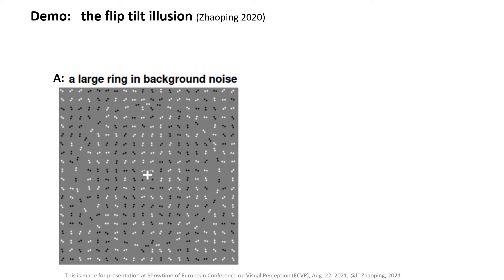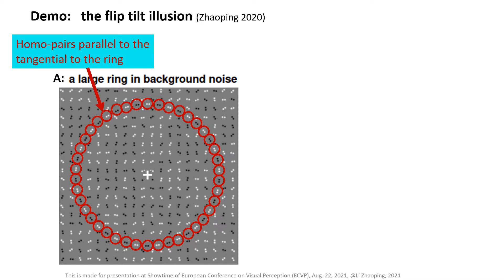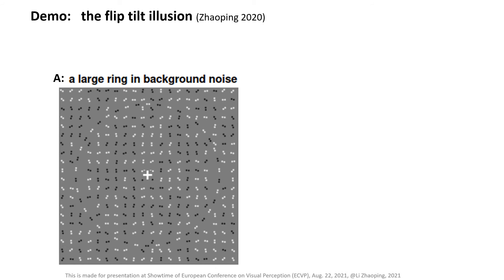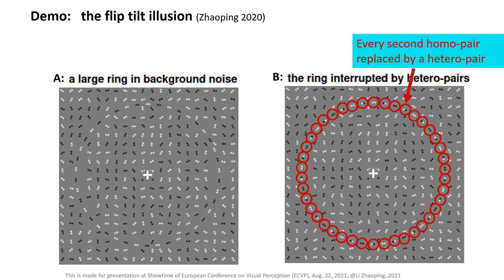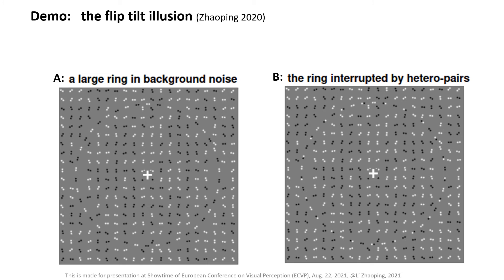To demonstrate this flip tilt illusion, we start with a baseline image without this illusion. If you fixate on the central cross, you can see a large ring in a background of noise. This is formed by many homo pairs of dots aligned tangentially to the ring. This ring is in your peripheral visual field when your gaze is directed to the central cross. No illusions here yet. This second image differs from the first one only in the dot pairs in the ring — every second dot pair is replaced by a hadal pair of dots. Now if you fixate on the central cross, the ring is much more difficult to see, because the hadal pairs appear orthogonal to the ring by the flip tilt illusion.